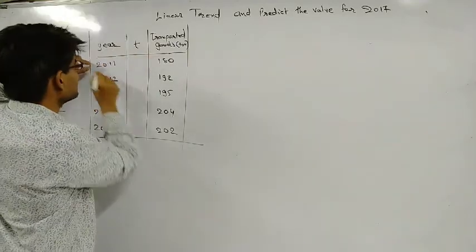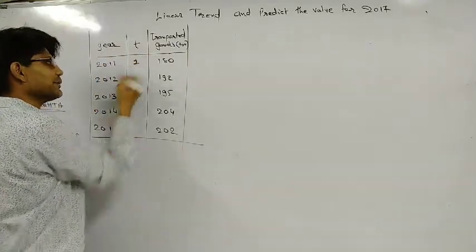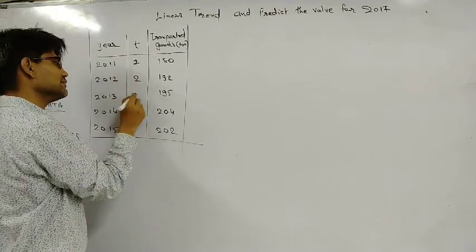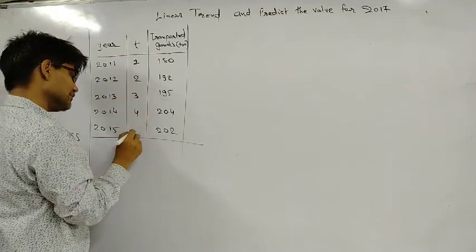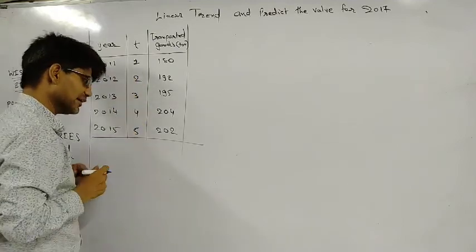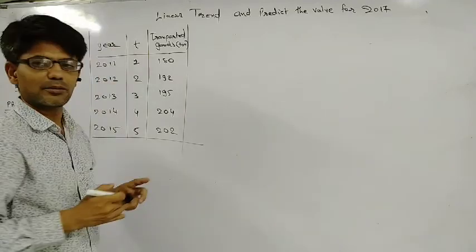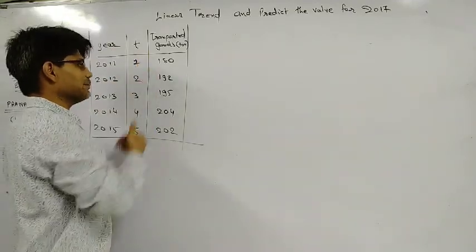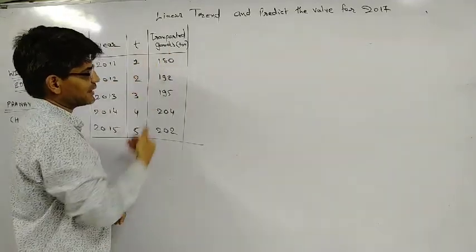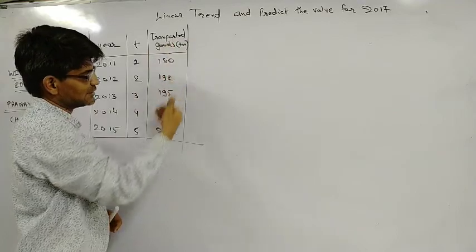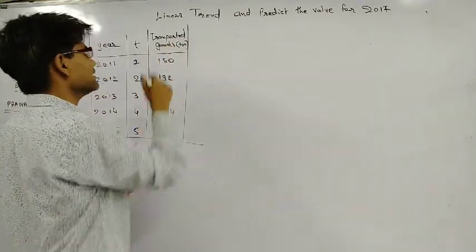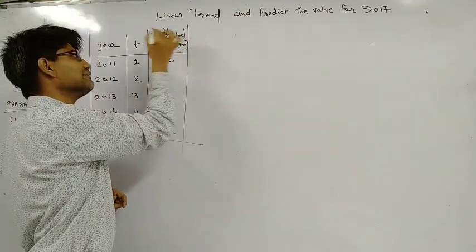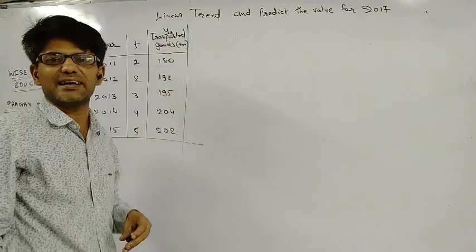We will assign a number to time. So if we are in 2011, that is the first year, the third year, the fourth year, the fifth year — we have changes over 5 years. In the third year it has increased. So we will assign a number to time T, and we will assign a corresponding Y value. But I will not call it Y exactly, because this is time series.